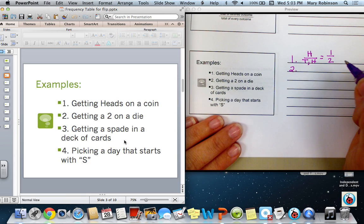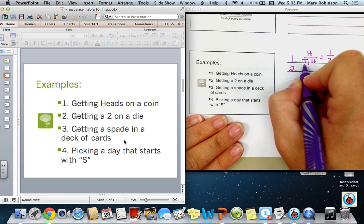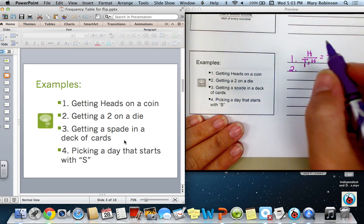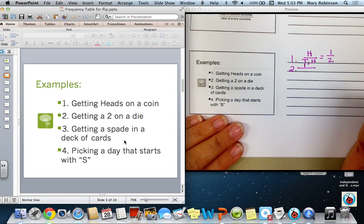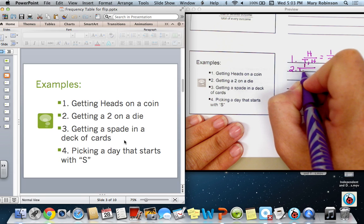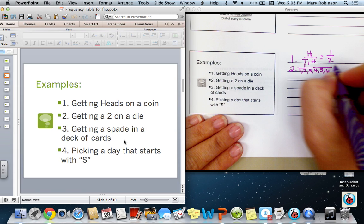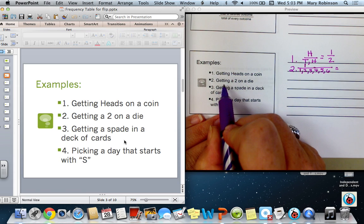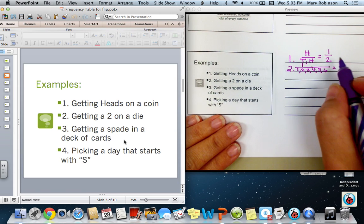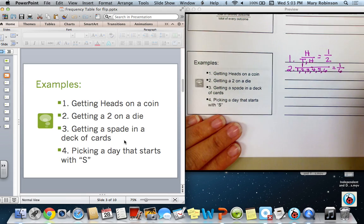Number two, getting a two on the roll of a die. Well, there is only one two on the die, so that is only one possible desired outcome. How many possible outcomes do we have? You could roll a one, a two, a three, a four, a five, or a six, meaning the probability of getting a two on a die would be one, which is our numerator, over six, because there are six possible outcomes.